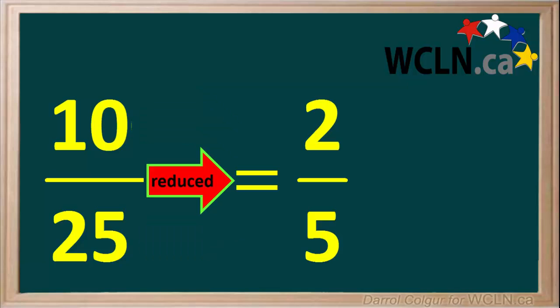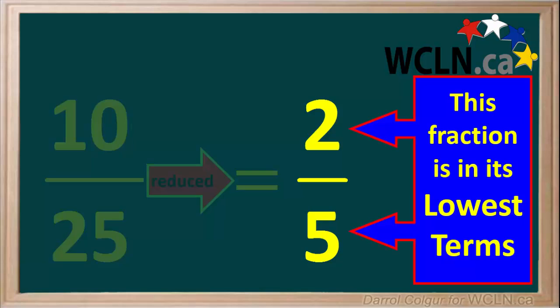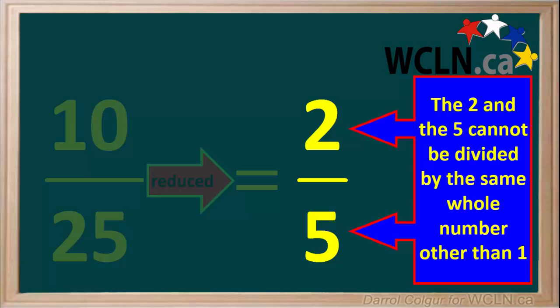So our original fraction 10 25ths has now been reduced to 2 5ths. The fraction 2 5ths is in its lowest terms. We can say this because the 2 and the 5 cannot be divided by the same whole number other than 1.